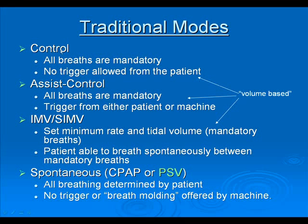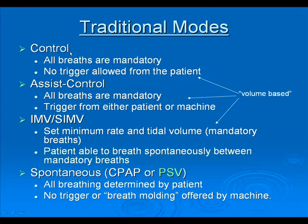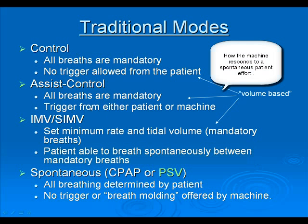Looking at some of the traditional modes — control, for example — the patient gets all mandatory breaths and is unable to trigger any breaths. It's rarely used for obvious reasons. In assist control, the patient receives mandatory breaths but is also able to trigger the machine and get a machine-set tidal volume breath. In IMV and SIMV, there is also a set minimum rate and tidal volume, with mandatory breaths, but the patient can breathe spontaneously in between machine breaths. Comparing these three modes, what differentiates them is how the machine responds to spontaneous effort.